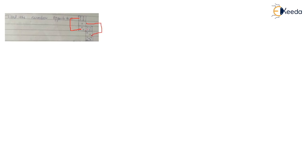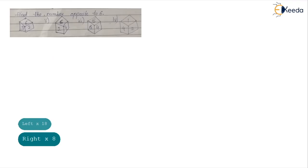In such type of question, what you need to do is find the opposite faces. The trick is that alternative faces are opposite of each other. So six opposite is three, one opposite is two, and four opposite is five. They ask opposite of three — that is six. So six is the right answer.